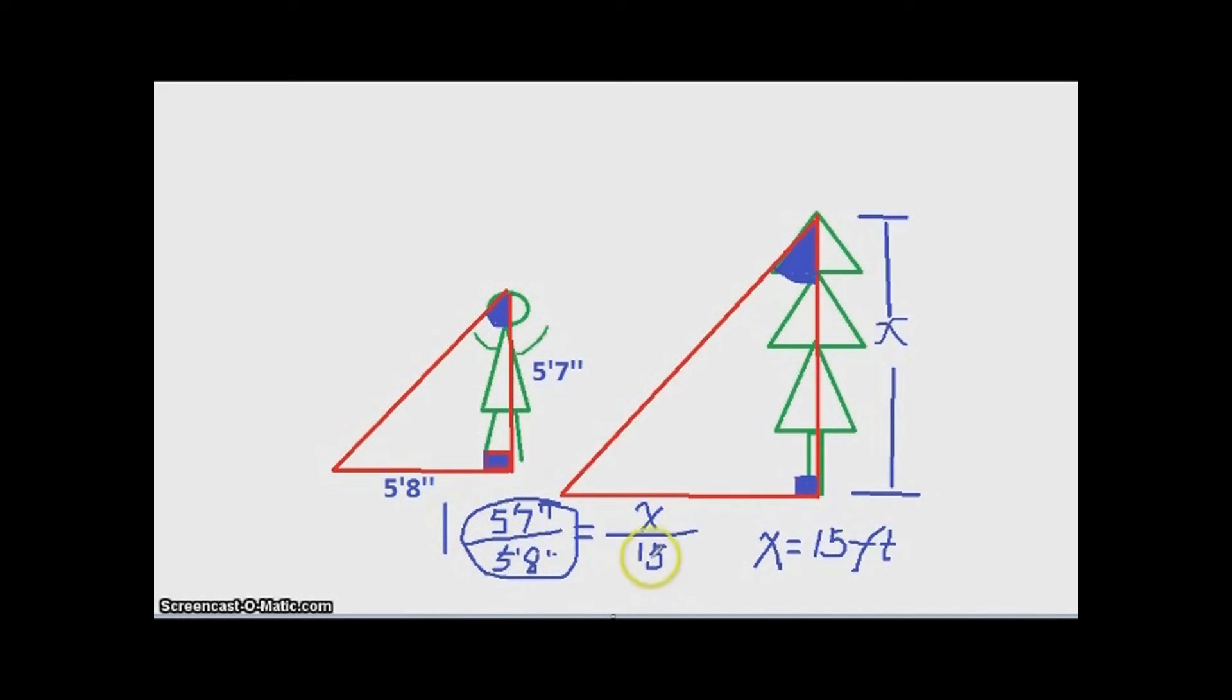Or, you can use the cross multiply. So, convert 5'7" into inches and 15 into inches, they multiply together. And equal to 5 feet and 8 inches. I convert that into inches. Multiply by the X. And then, we can cross multiply and find out X.